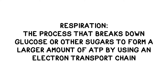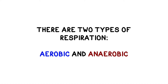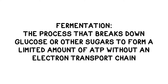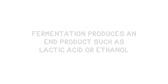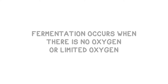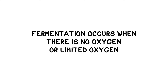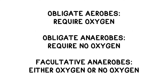To begin, let's go over some definitions. Respiration is the process that breaks down glucose or other sugars to form a larger amount of ATP by using an electron transport chain. There are two varieties: aerobic, if oxygen is available, and anaerobic, in which oxygen is not available. Fermentation is a separate process that breaks down glucose or other sugars to form a limited amount of ATP without the use of an electron transport chain. It produces an end product such as lactic acid or ethanol, and occurs when there is no oxygen or limited oxygen. Some organisms are obligate aerobes — they can only live in the presence of oxygen. Others are obligate anaerobes who can only live in environments with no oxygen. And some, like yeast, are facultative anaerobes — they can live in either type of environment and switch the process they use depending on the availability of oxygen.